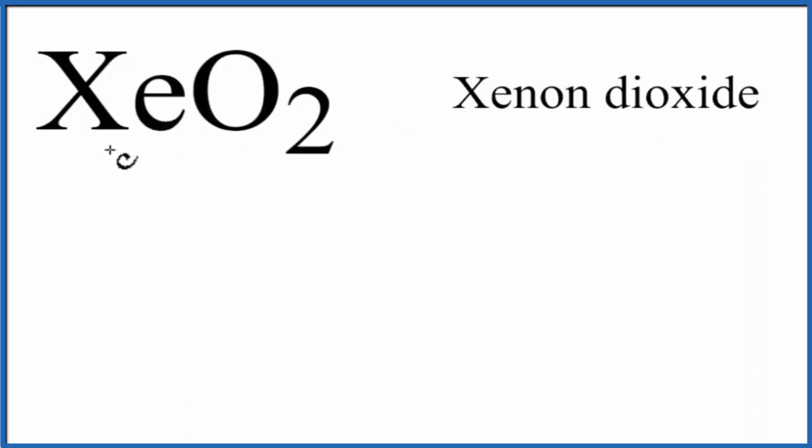Xenon is in group 18. It has 8 valence electrons. Oxygen is in group 16. It has 6 valence electrons, but we have 2 oxygens, so we'll multiply this by 2. 8 plus 12,